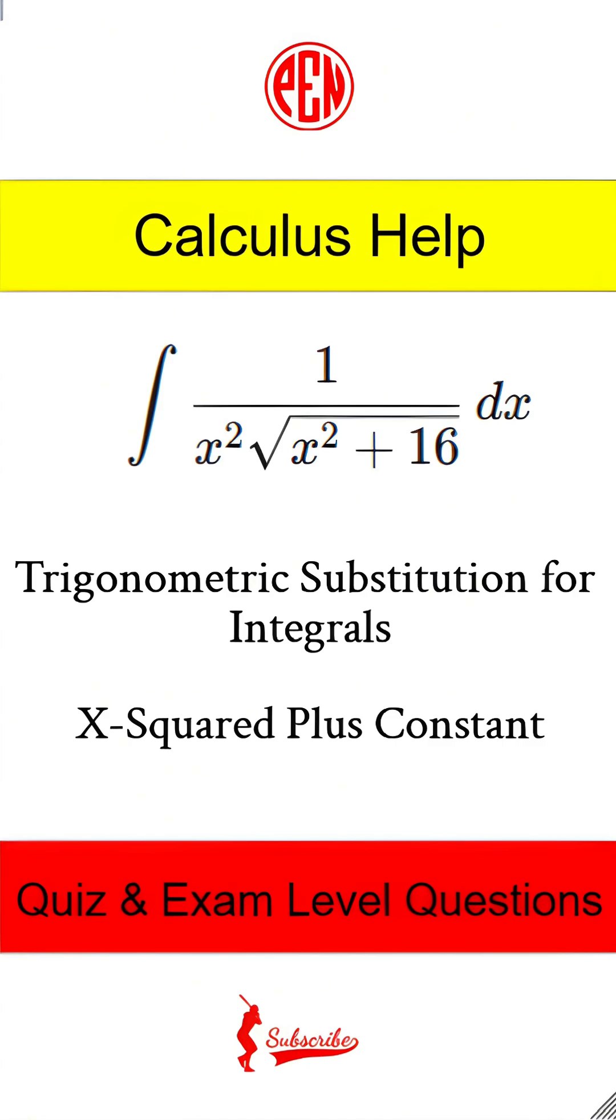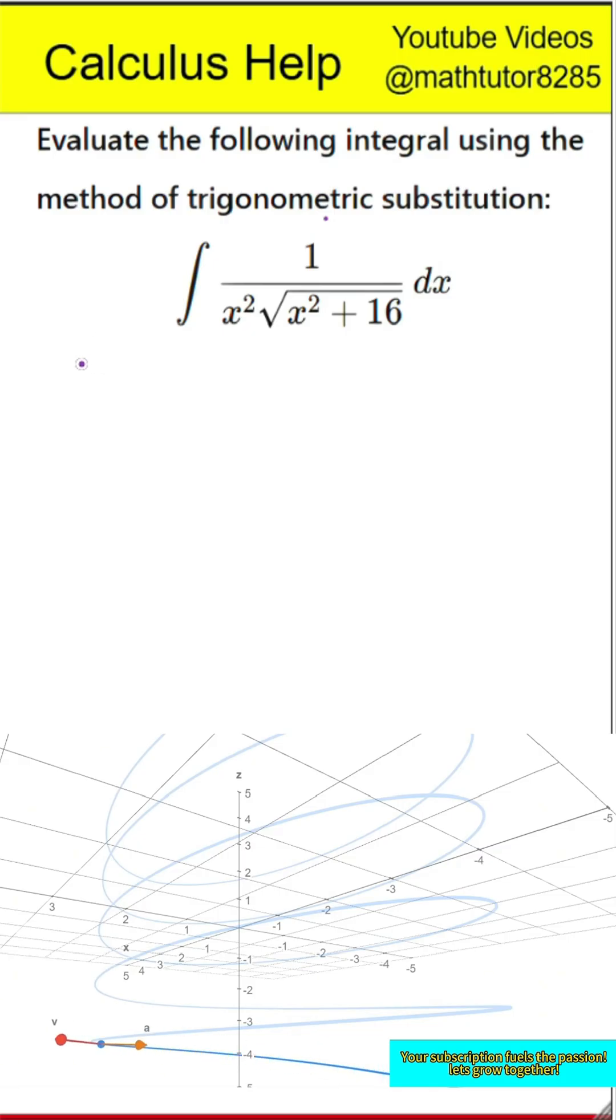This question is to evaluate a specific integral using the method of trigonometric substitution. The integral of 1 divided by the quantity x squared times the square root of x squared plus 16 with respect to x.